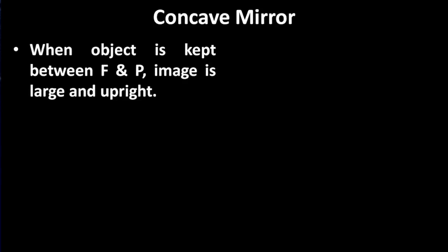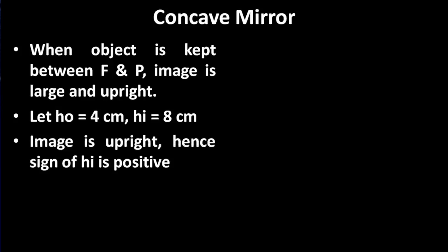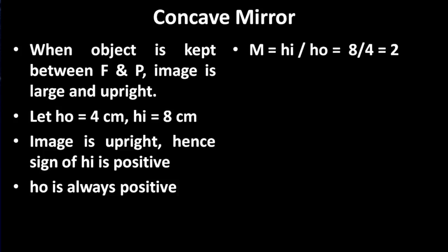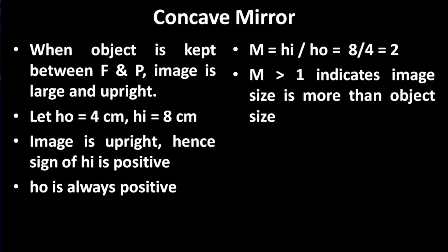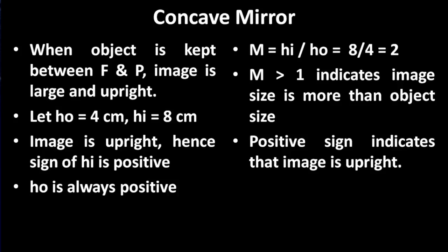When the object is kept between the focus and pole, the image formed is large and upright. Let height of object be 4 centimeters and height of image be 8 centimeters. Since the image is upright, it is formed above the principal axis and according to sign convention its sign is positive. Height of object is always taken positive. We get magnification equal to 2. Magnification greater than 1 indicates that the image size is more than the object size. The positive sign indicates that the image is upright.